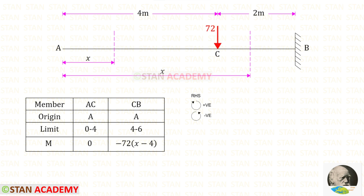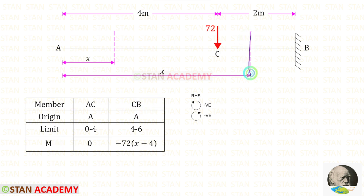Now we are going to find the moment M from point A, following the right-hand side rule where clockwise is positive and anticlockwise is negative. In member AC, up to the section there is no load, so the moment M will be 0. In member CB, there is only one load — the point load of 72 kilonewtons — acting in the anticlockwise direction, so it will be negative. The distance to the section is X minus 4, giving M = -72(X - 4).